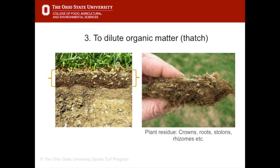The third reason top dressing is applied to turf is to dilute thatch. Thatch is a layer of organic material that builds up between the grass plant and the soil. It is made up of plant residues like old crowns, roots, stolons and rhizomes. Grass clippings do not contribute to the thatch layer since they break down too quickly. Some thatch is actually a good thing on an athletic field as it can provide the athlete with a soft cushion if they fall, but once it becomes thicker than half an inch it can hold water and cause problems with shallow rooting.